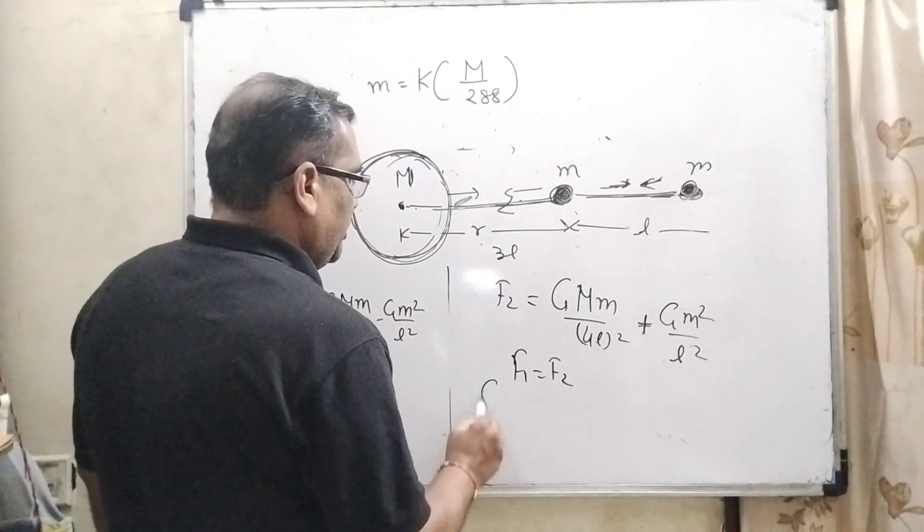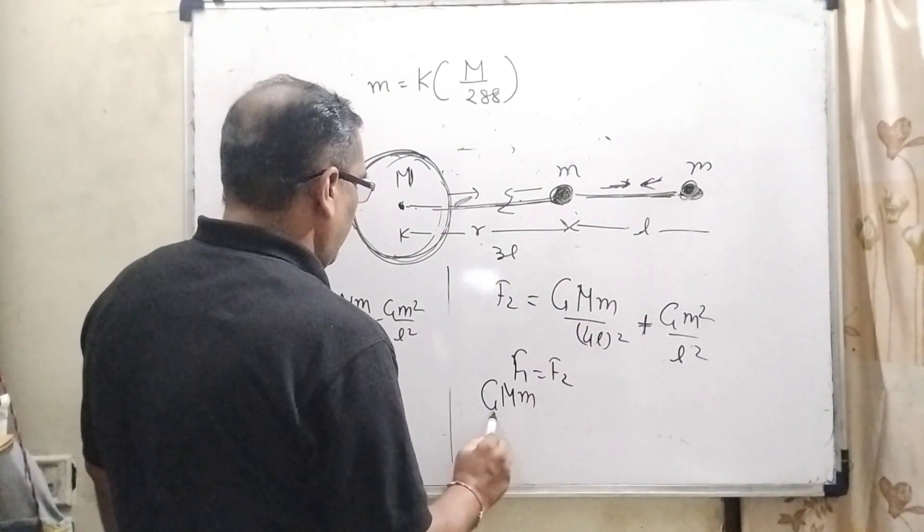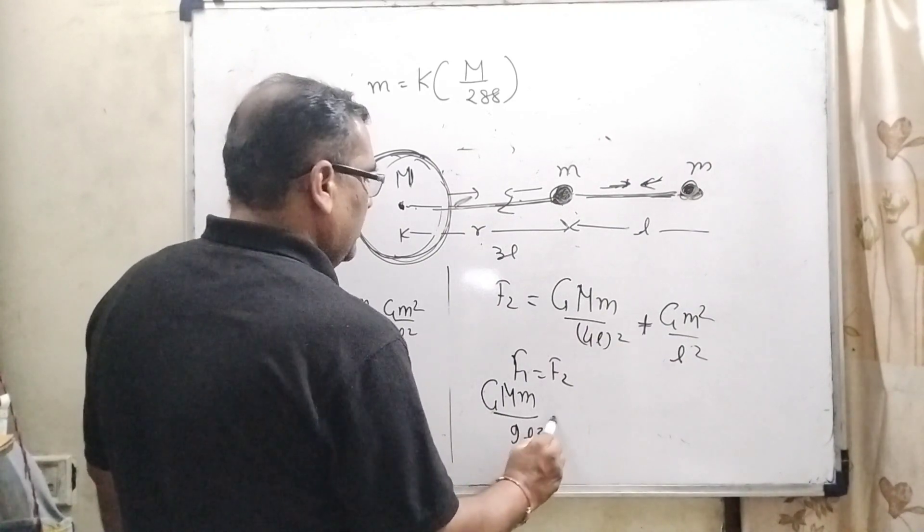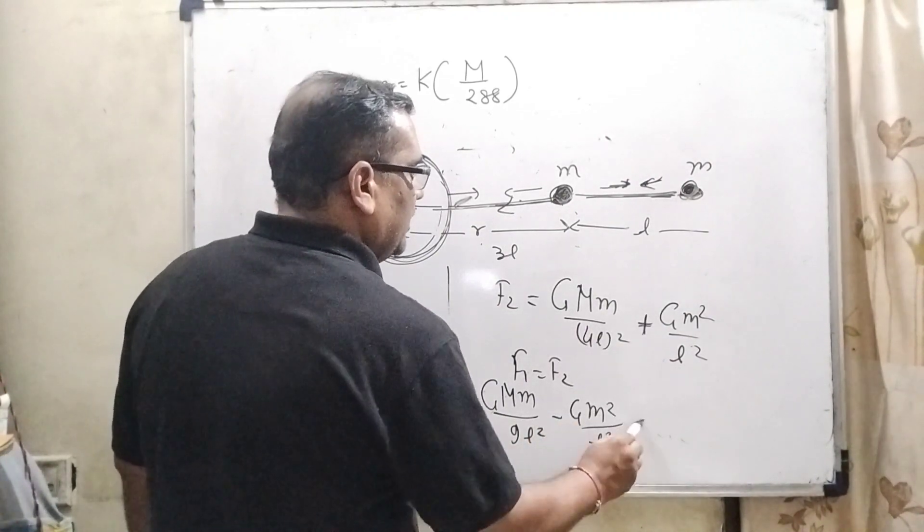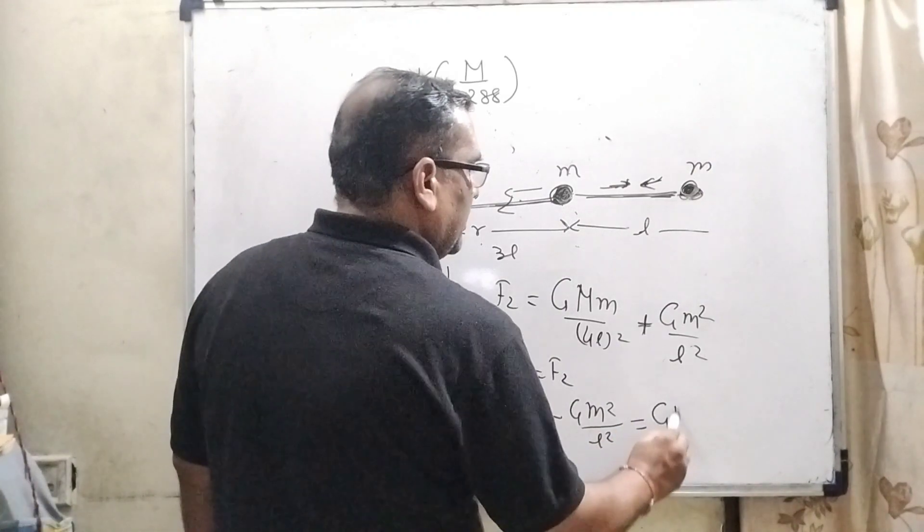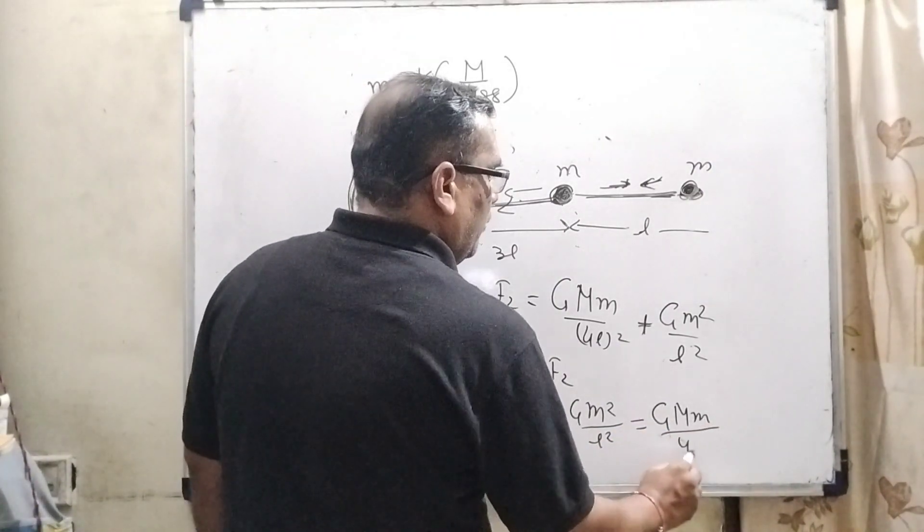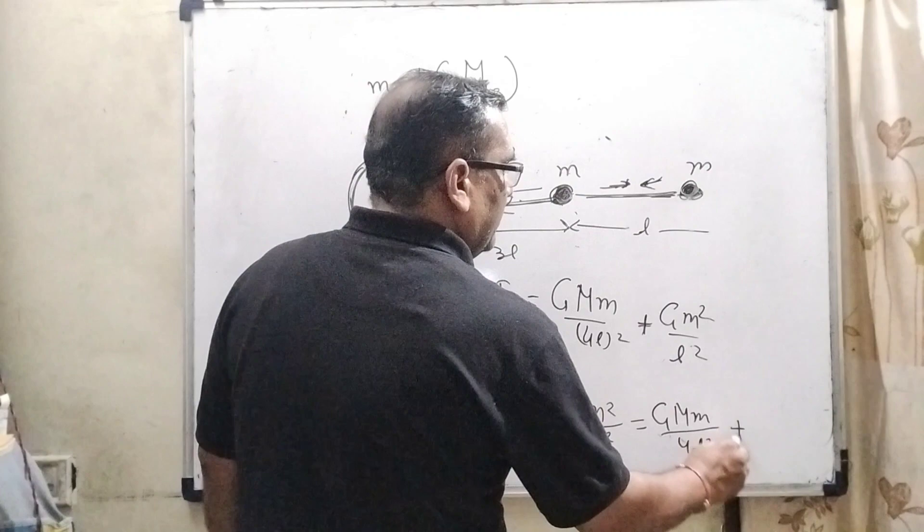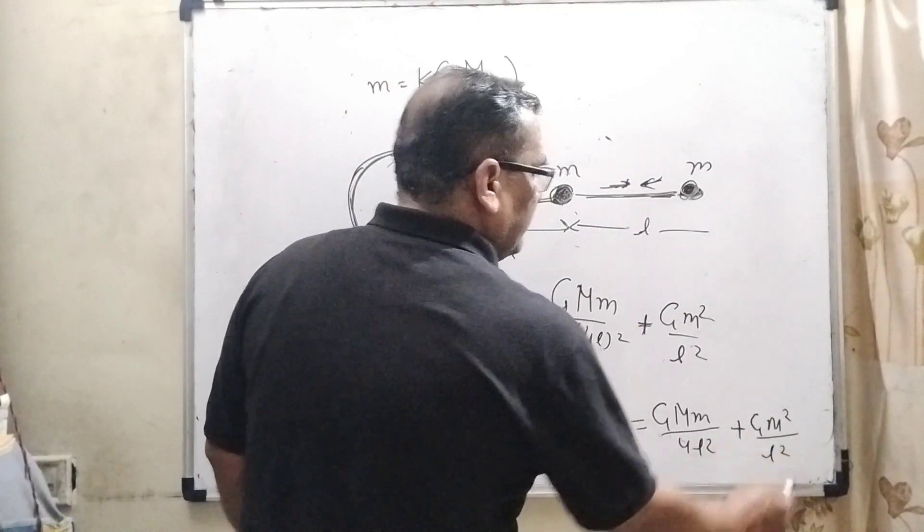So now comparing: G capital M small m upon 9L square minus G small m square upon L square equals G capital M small m upon 16L square plus G M square upon L square.